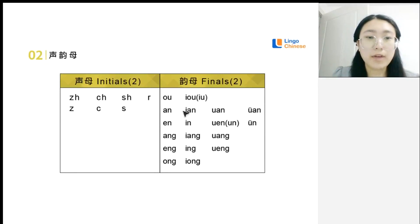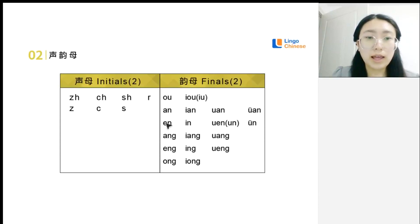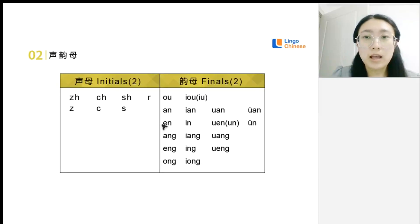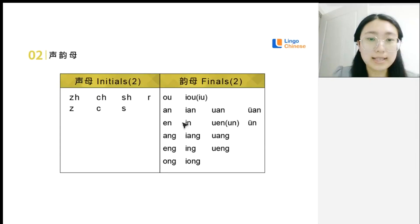We have 'u', 'e', and 'n' together. Putting 'yu' and 'n' together we have 'yuan'. 'E' and 'n' together we have 'en'. If you say 'en' in a conversation, it means yes or okay — if someone says something to you and you say 'en', you show that you agree with them. 'Yi' and 'en' together gives 'yin'. 'U', 'e', and 'n' together gives 'wen'.